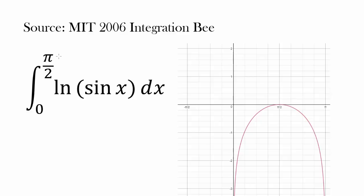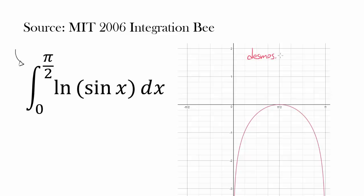I want to try out another very interesting integral from MIT 2006 integration B — I included a link below so you guys can check it out. In this video we are going to concentrate on solving this very interesting improper integral. I have it graphed right here from Desmos.com — you are going from 0 to π/2, and this function is y equals natural log of sin of x, with a vertical asymptote, and you want to find this area from 0 to π/2.